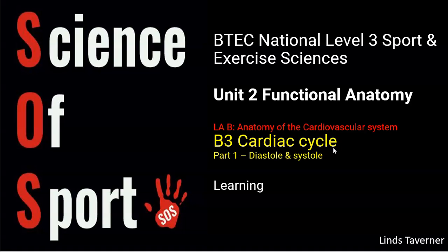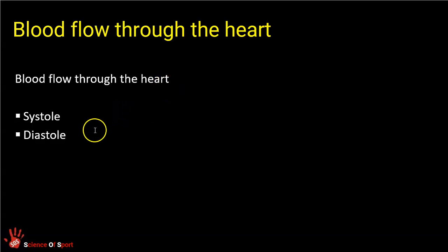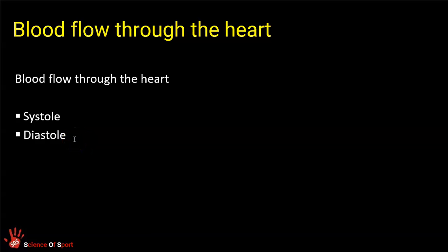How do we make the heart chambers contract? What nervous system control is there? Your specification for this part says you need to understand and be able to describe the blood flow through the heart and in particular, link that blood flow to systole and diastole — two very specific terms that you will need to be able to understand and explain.